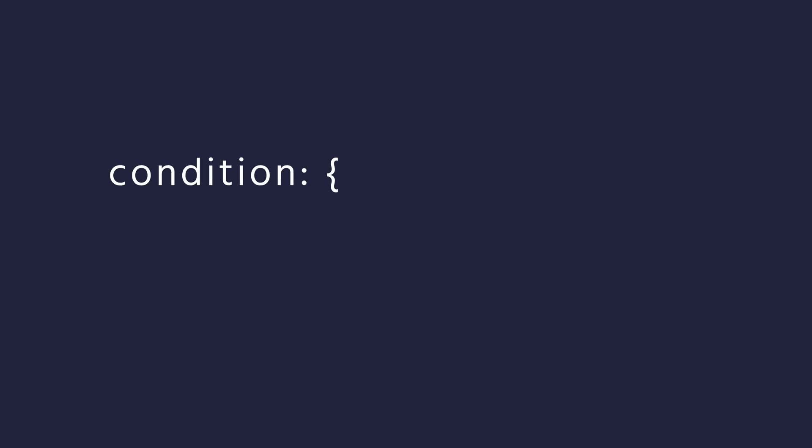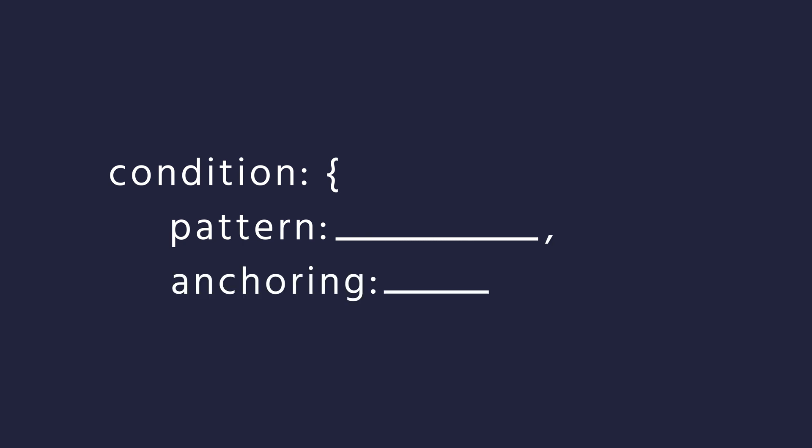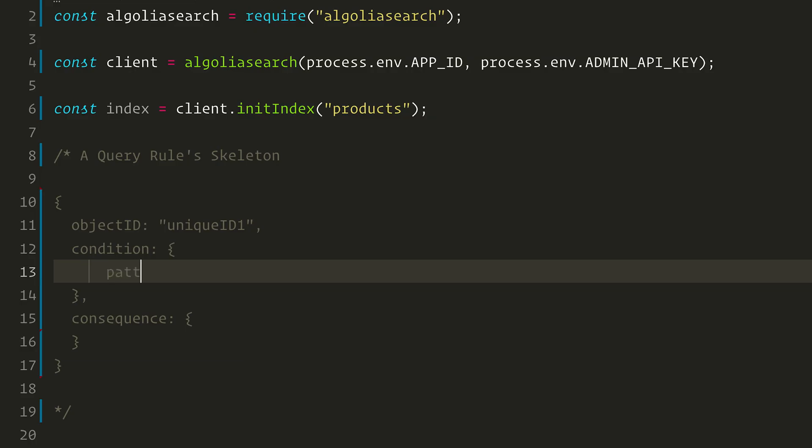Let's start with the condition. To define a condition, Algolia gives you two parameters: the pattern and the anchoring. Pattern defines the precise query terms that you are looking for, and anchoring tells the engine how to spot them. In our example, the pattern is TEE, so let's start writing pattern TEE.